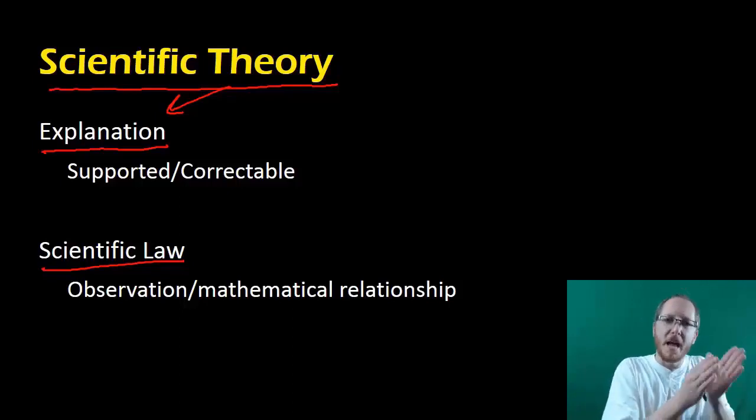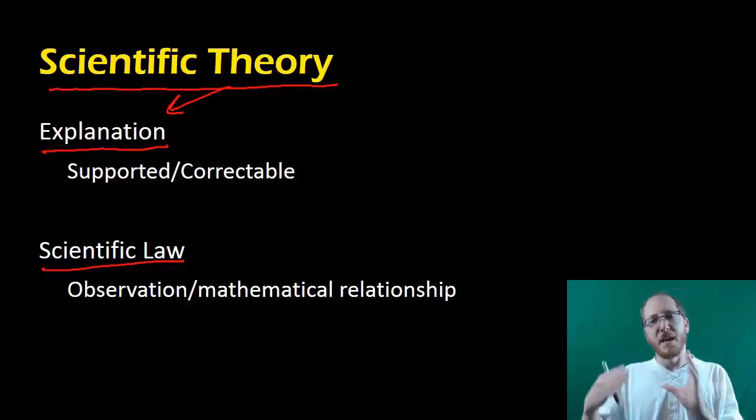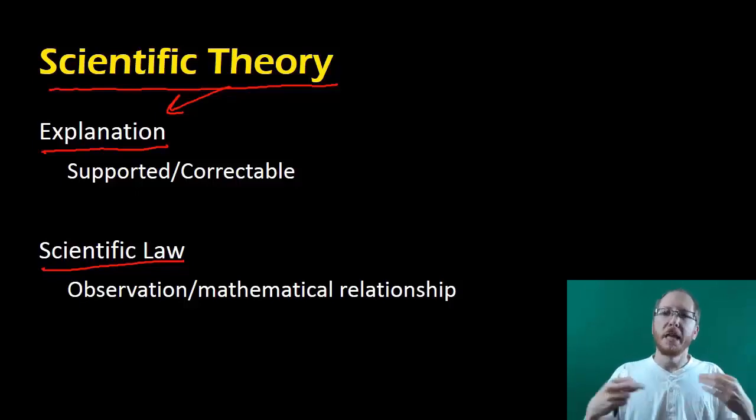So when we talk about hypotheses, theories, and laws, just realize they're three separate things. Hypothesis is more like your initial prediction. It's something you're going to test. A theory is an explanation that's been tested. It's been ultimately checked. And right now it's perfect for right now. And a law is going to be more of a relationship mathematically or an observation. It's just kind of what we see all the time. This is what we witness. That's it for 1-3. Hope you guys enjoyed it.